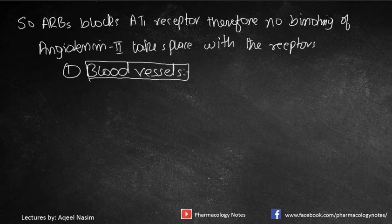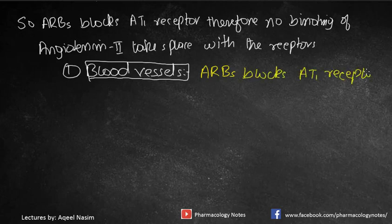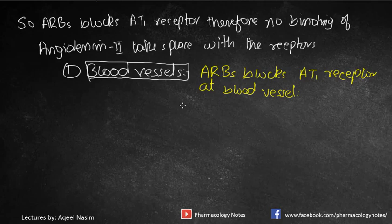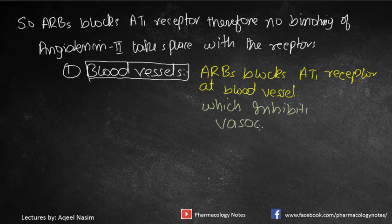ARBs work on two bases. First, blood vessels have AT1 receptors; angiotensin receptor blockers block AT1 receptors at blood vessels, causing vasodilation, because angiotensin 2 is a potent vasoconstrictor. If no binding of angiotensin 2 takes place, vasodilation results.